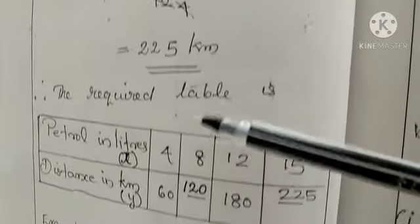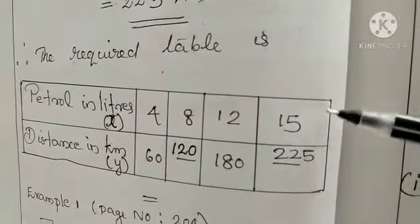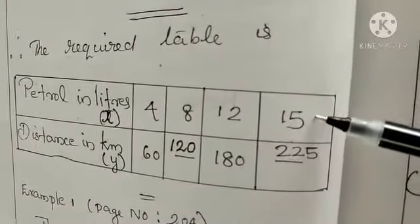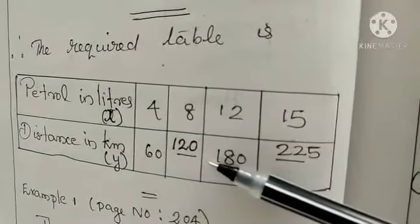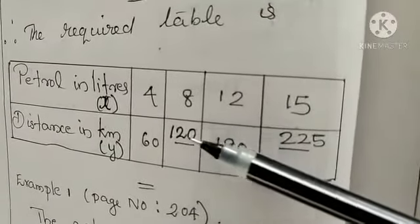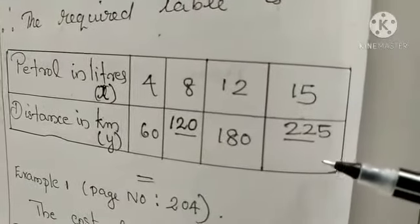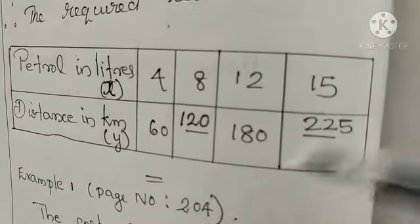So the required table we can write like this. These values are x values: x1, x2, x3, x4. Then these are y1, y2, y3, y4. So we calculated these two unknowns, y2 and y4. Understood the way?